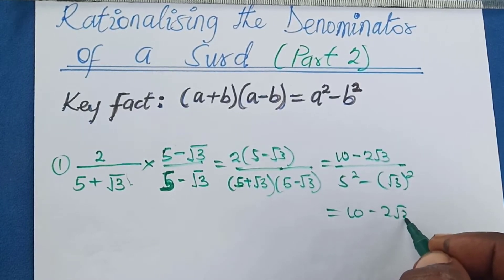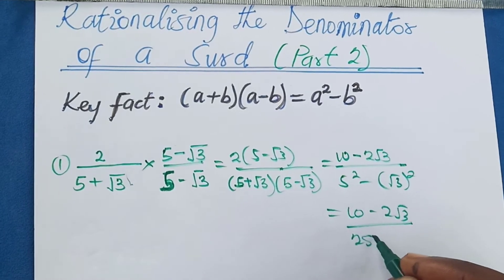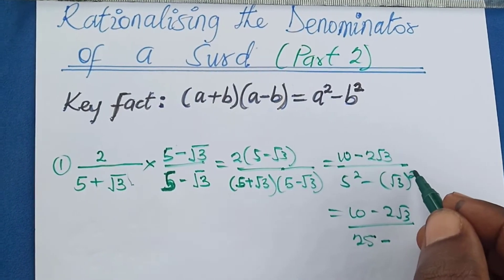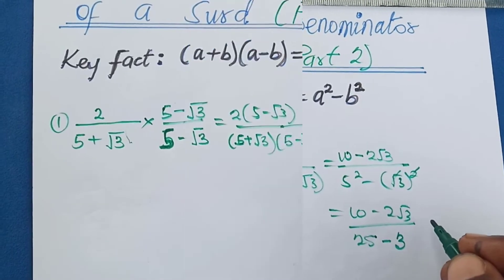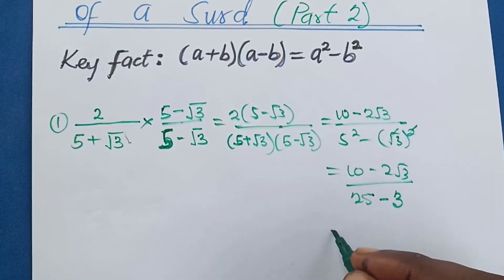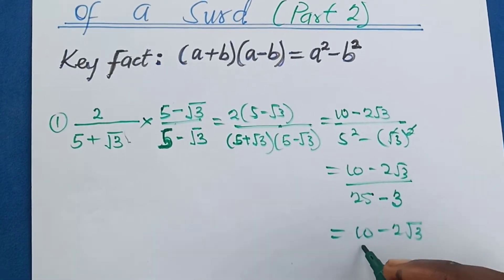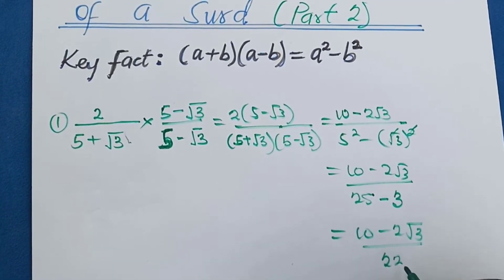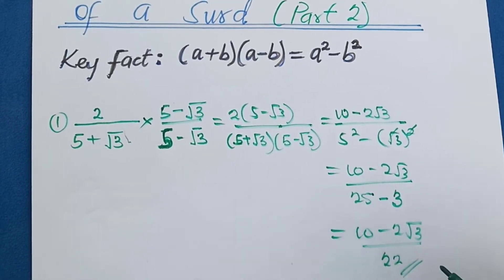We can simplify this further: we get (10 minus 2√3) over — 5 squared is 25, minus 3 (the square cancels the root) — so this is equal to (10 minus 2√3) over (25 minus 3), which is 22. That's your answer. We have made the denominator a rational number.